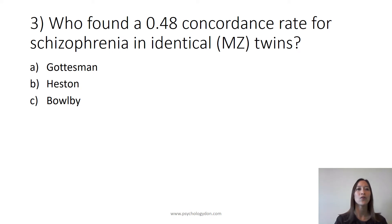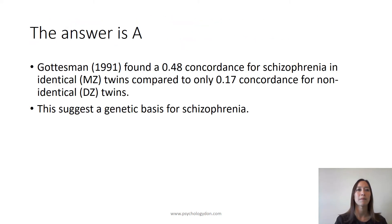Question 3: Who found a 0.48 concordance rate for schizophrenia in identical or monozygotic twins? Is it A: Gottesman, B: Heston, or C: Bowlby? The answer is A. Gottesman, 1991, found a 0.48 concordance for schizophrenia in identical or monozygotic twins, compared to only 0.17 concordance for non-identical dizygotic twins. This suggests a genetic basis for schizophrenia.